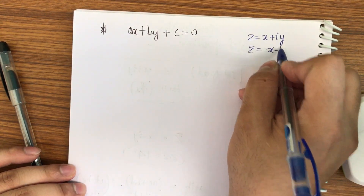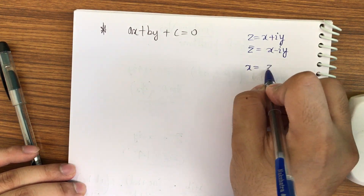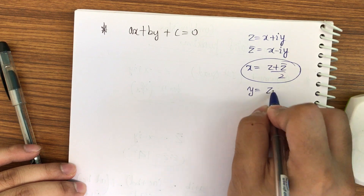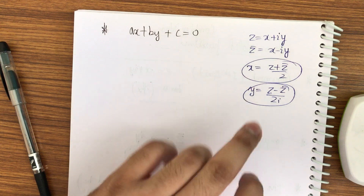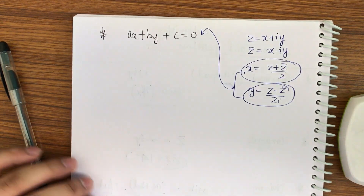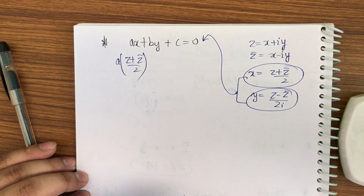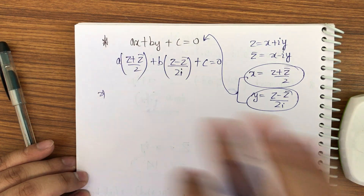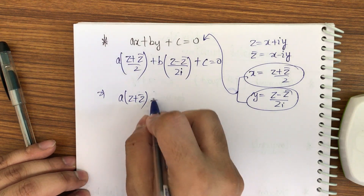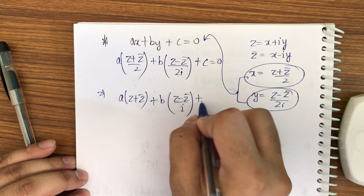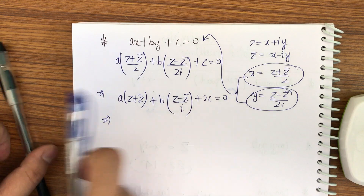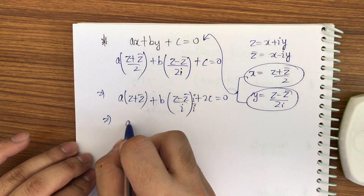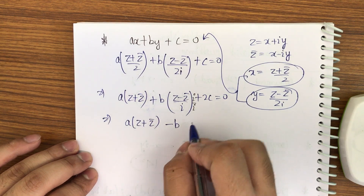We have z = x + iy and z̄ = x - iy. Adding both equations gives x = (z + z̄)/2. Subtracting gives y = (z - z̄)/(2i). Now take these values of x and y and substitute into ax + by + c = 0, giving a(z + z̄)/2 + b(z - z̄)/(2i) + c = 0. Multiplying both sides by 2: a(z + z̄) + b(z - z̄)/i + 2c = 0. Then multiply and divide the b-term by i, so that i/i·i = -1, giving a(z + z̄) - bi(z - z̄) + 2c = 0.